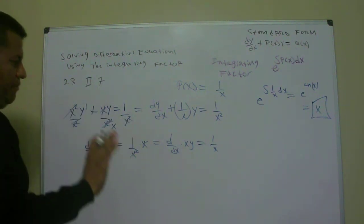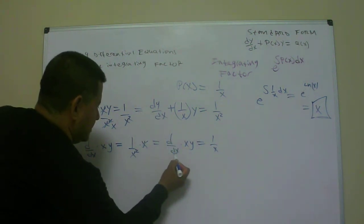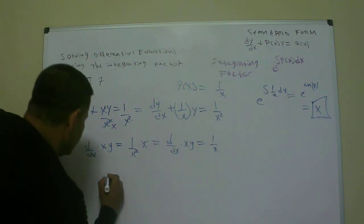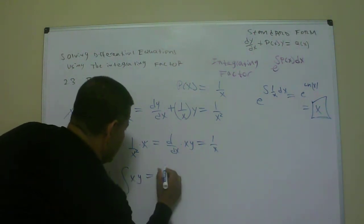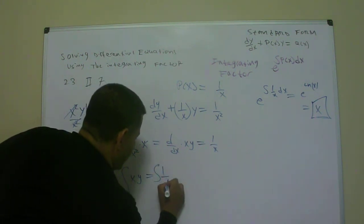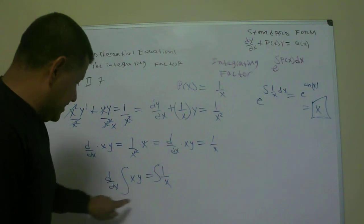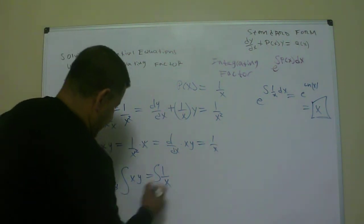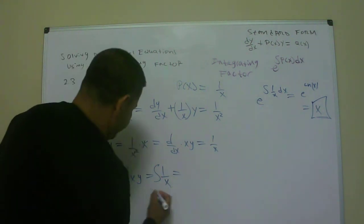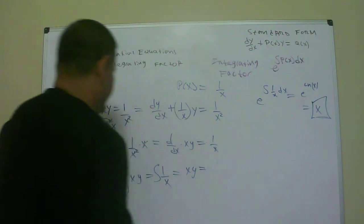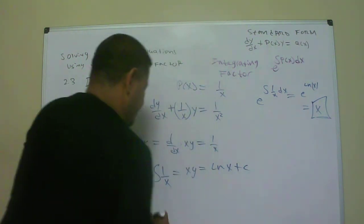Now I integrate both sides. When I integrate the left side, the d/dx disappears and I just get xy. On the right side, the integral of 1/x gives ln of x plus c. So the result is xy equals ln(x) plus c.